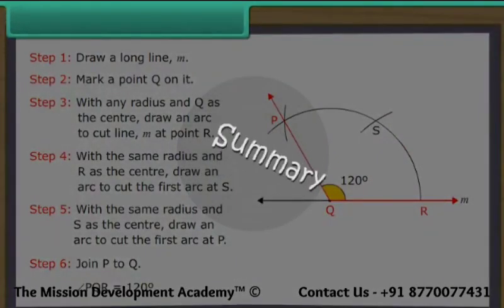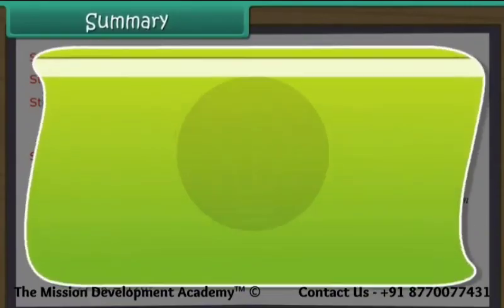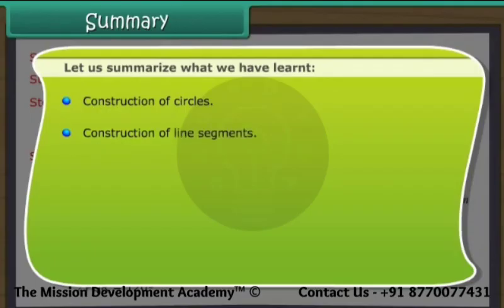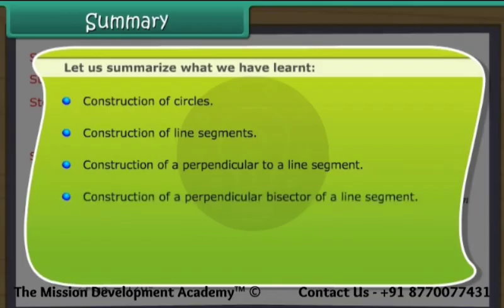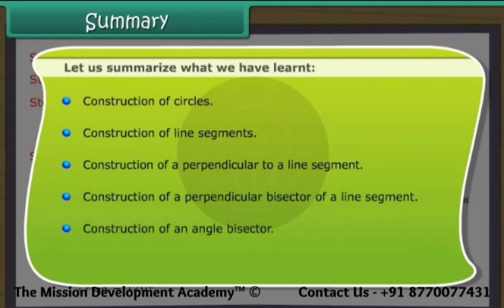Summary. Let us summarize what we have learned: construction of circles, construction of line segments, construction of a perpendicular to a line segment, construction of a perpendicular bisector of a line segment, construction of an angle bisector, and construction of angles.